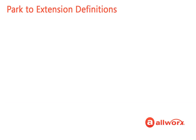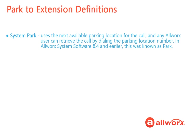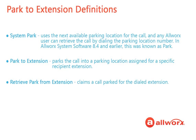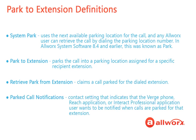The Park to Extension feature introduces new terminology to the AllWorks system. System Park uses the next available parking location for the call, and any AllWorks user can retrieve the call by dialing the parking location number — in AllWorks system software 8.4 and earlier, this was known as Park. Park to Extension parks the call into a parking location assigned for a specific recipient extension. Retrieve Park from Extension claims a call parked for the dialed extension. Parked Call Notifications is a Contact setting indicating that the Verge phone, Reach application, or Interact Professional application user wants to be notified when calls are parked for that extension.